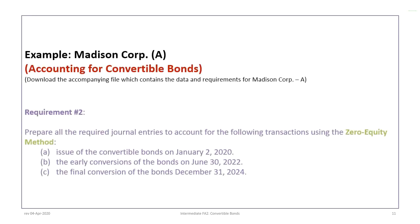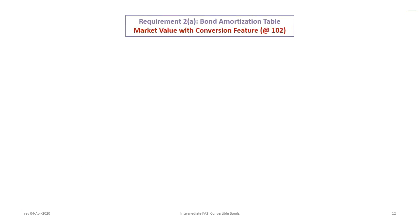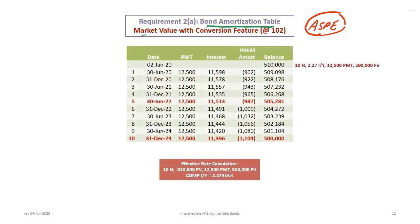Now we move on to requirement two, doing all the same things as requirement one but using the zero equity method instead of the residual method. We'll record journal entries to issue the bonds on January 2nd, the early conversion on June 30th, and the final conversion on December 31st, 2024. The main difference with the zero equity approach — applicable only for ASPE — is that we do not have to prepare any bond calculations without the conversion feature. The bond amortization table is based on the present value with the conversion feature at $102.